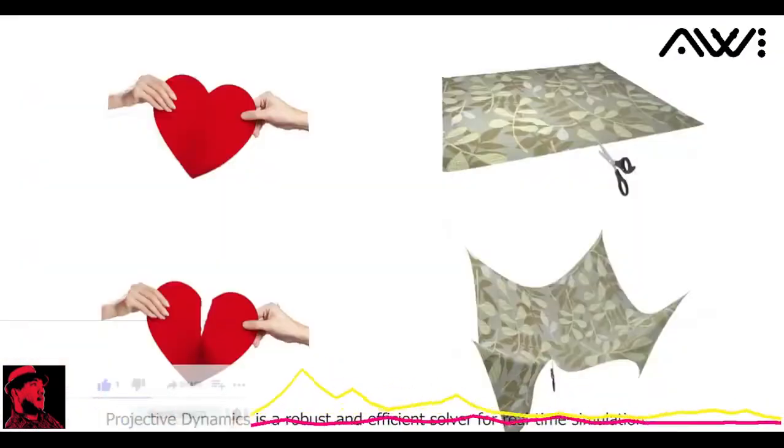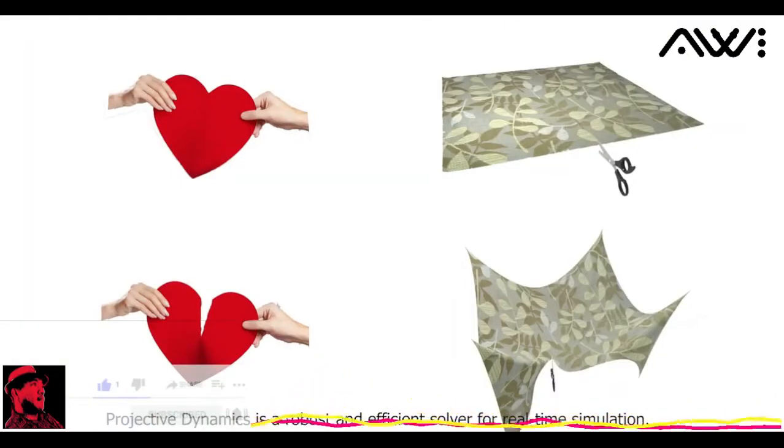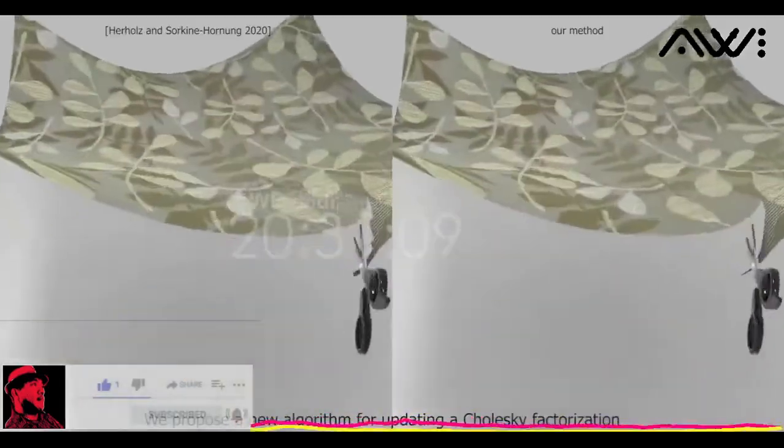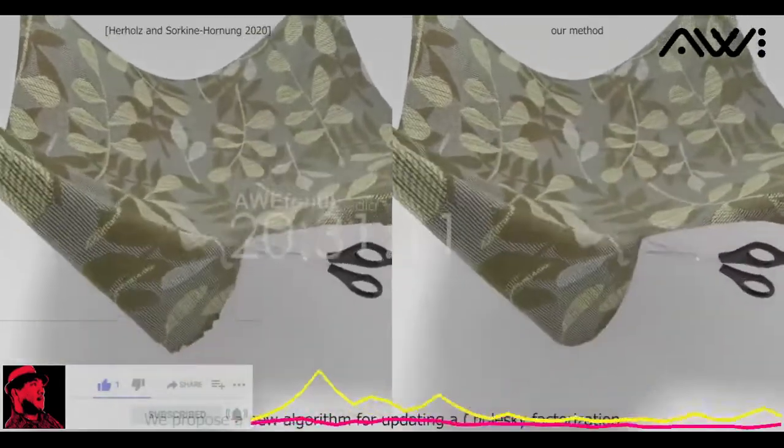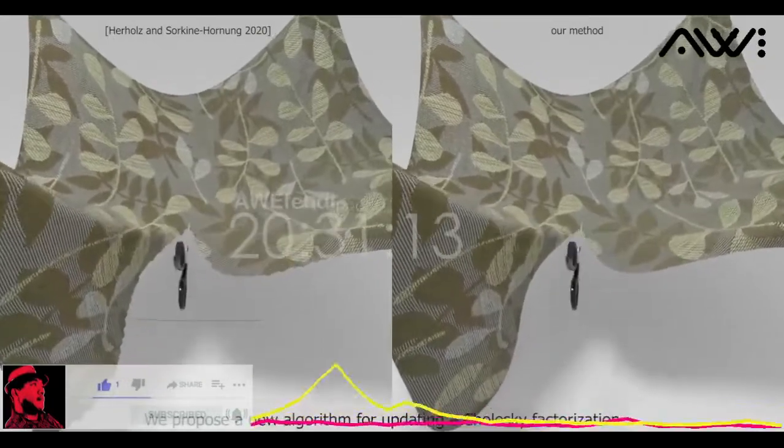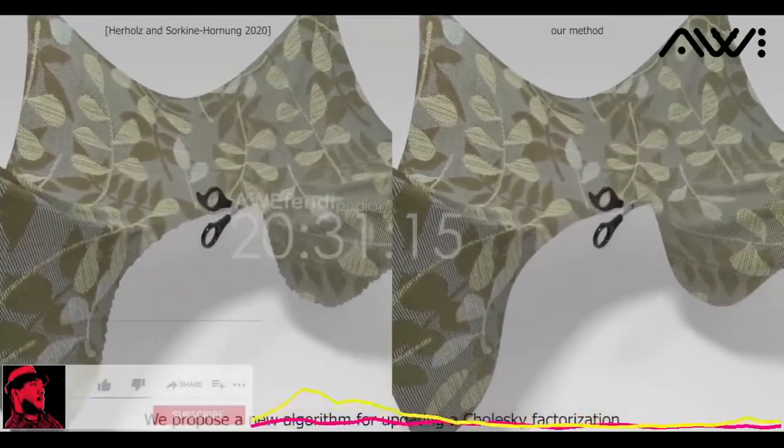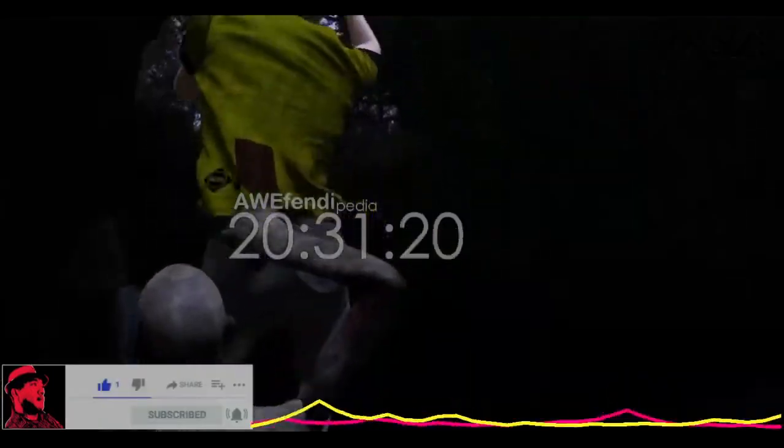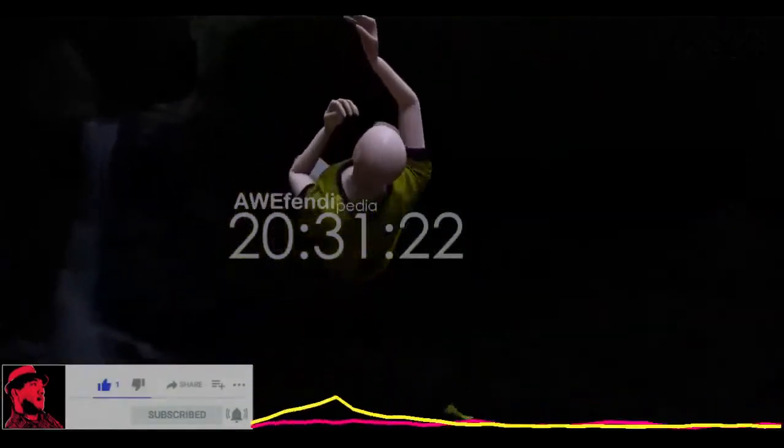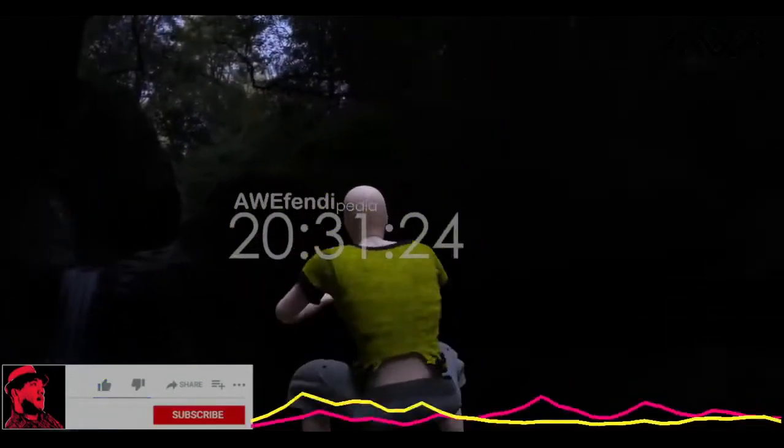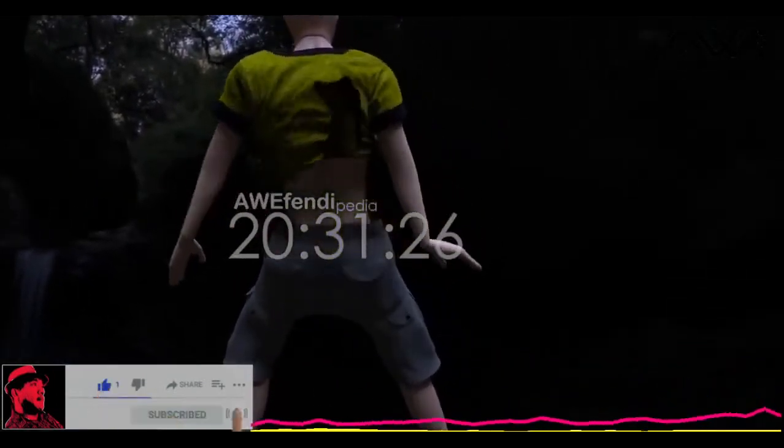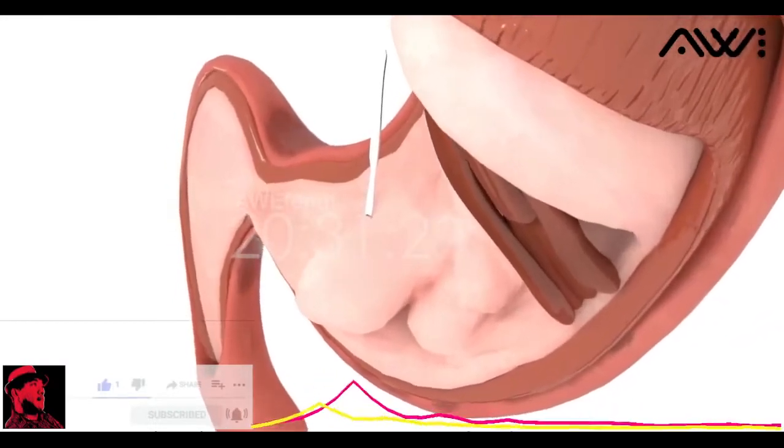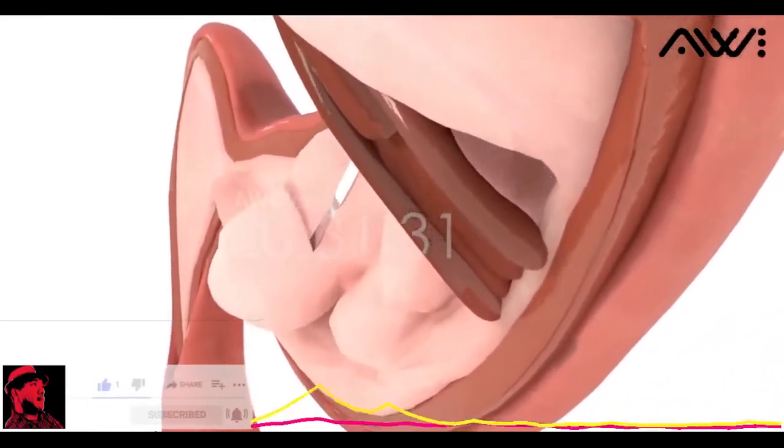Projective dynamics is a robust and efficient solver for real-time simulation, but it is hard to encode topological changes, such as tearing and cutting. We propose a new algorithm for updating a Cholesky factorization, which speeds up projective dynamics simulations with interactive cutting and tearing. Now, within the projective dynamics framework, a zombie can easily tear apart the t-shirt of a NPC, and a scalpel can cut apart tissues in a surgical simulation.